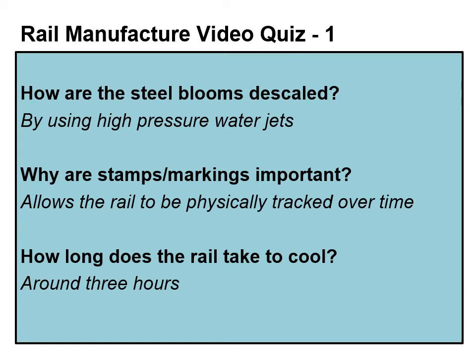Here are the answers to part one of the quiz. The steel blooms are descaled by using high pressure water jets. The stamps and markings on the rails allow the rails to be physically tracked over time — this is important for asset management so we know how long the rail has been in place and in use. The rails typically take around three hours to cool.